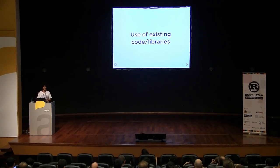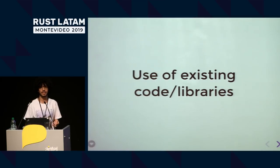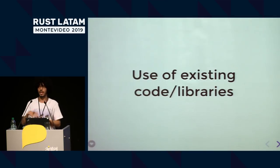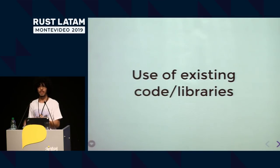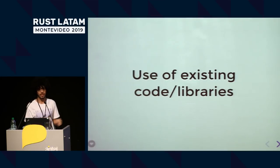You can also use FFI to use existing code or libraries. Let's say there's a new language and you can't create a GUI application because there are no libraries for it. You can basically create a wrapper around something like a C GTK library using FFI — you talk to a library externally and you can use it in your cool new language.